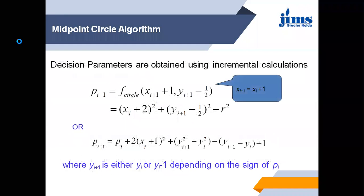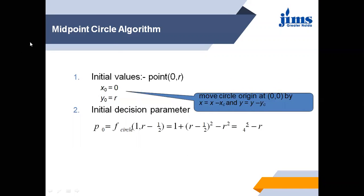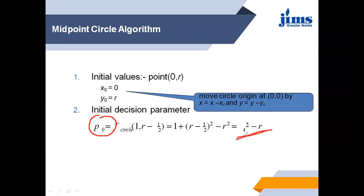By this method we can find out the position of the next pixel, that is pi plus 1. We put in the value of the next pixel, that is yi plus 1. After solving this equation, we find that p0 equals 5/4 minus r. As I told you about the initial points: when we have to draw a circle, we start calculating from p0 = 5/4 minus r.